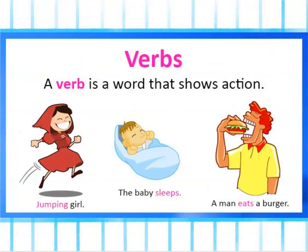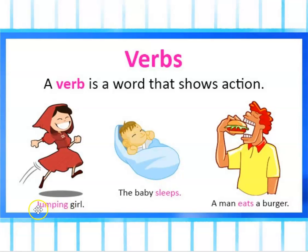What is a verb? A verb is a word that shows action. For example: a jumping girl, the baby sleeps, a man eats a burger. All of the verbs are shown in pink — jumping, sleeps, and eats. These are all actions.